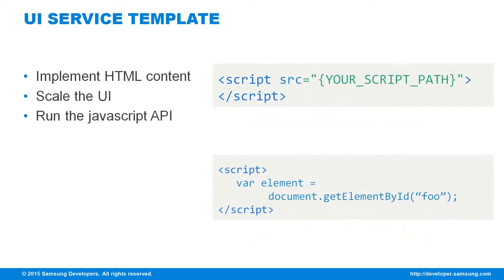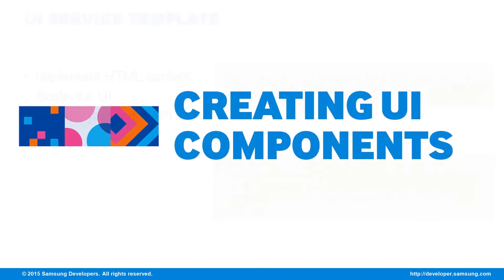Now that we have set up the library and scaled the UI, we can indicate the location where to make our scripts. We can either use the script tag with the source pointing to an external JS file, or we can just input the scripts inside the tag. TAO has an array of UI components that can make application coding easier.